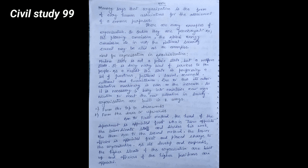Organizations are built in two ways: first, from the top to downwards, and second, from the down to upwards. According to first method, the head of the department is appointed first who in turn appoints the subordinate staff and divides his work between them.